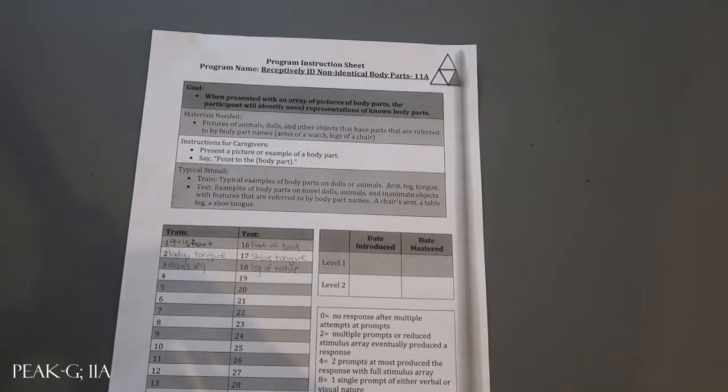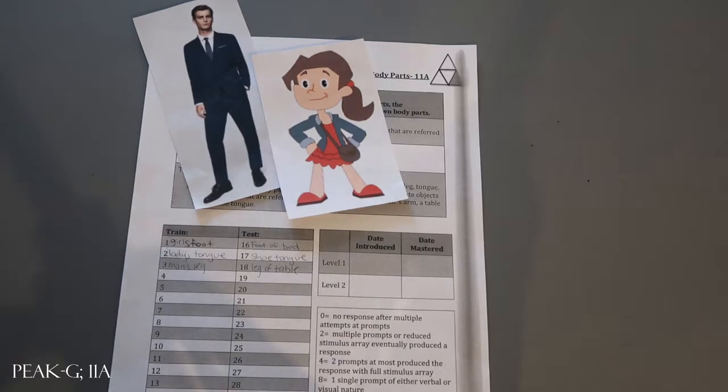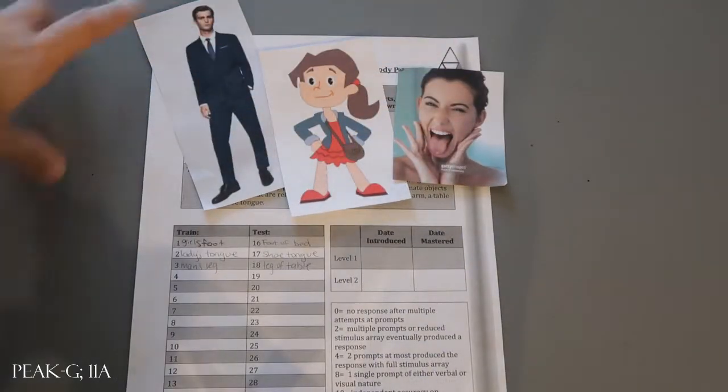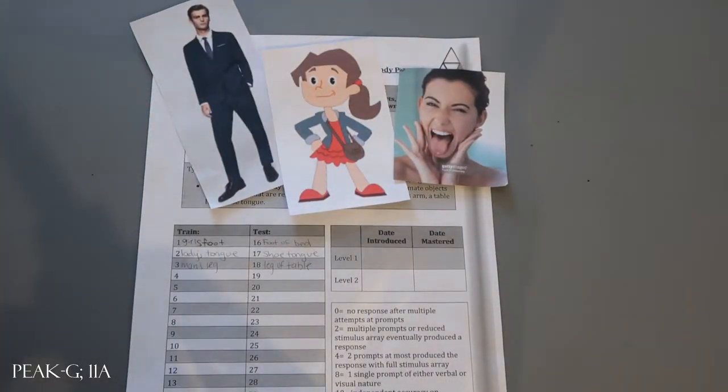For the train stimuli we just used various Google images, cartoons, real people, and so we targeted for Stimuli 1 a girl's foot, a lady's tongue for number 2, and a man's leg for number 3.